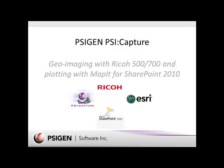In this presentation, we'll go over the features of SciGen SciCapture and how it can be used to automatically harvest and import JPEG images taken with GPS-enabled cameras. We'll focus on the Ricoh 500 and 700 SE cameras and show you how we can take those images, extract the data, and then post them into SharePoint and use Esri MapIt to plot out the location of the images.